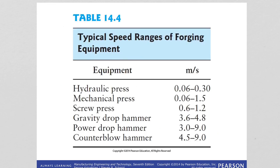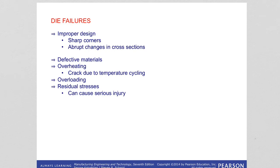This table shows typical speed ranges for forging equipment. Die failures can result from: improper die design such as sharp corners or abrupt changes in cross section; use of defective die materials; overheating due to temperature cycling of the dies which can cause cracking; overloading with excessive forces; and residual stresses which can cause sudden cracking and failure of the die.